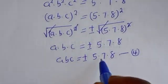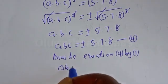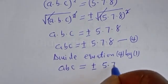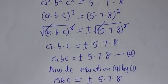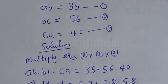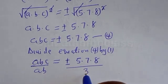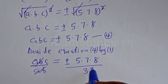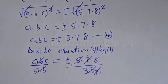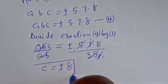Now let's divide equation 4 by equation 1. Equation 4 is ABC = ±5×7×8, and equation 1 is AB=35. Dividing: the AB terms cancel, the 5s cancel, and the 7s cancel, giving C is equal to plus or minus 8. This is the value of C.